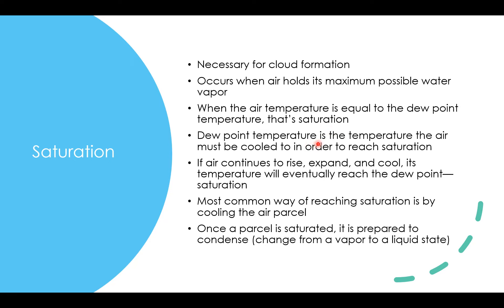The dew point temperature is the temperature the air must be cooled to in order for saturation to be reached. If air continues to rise, expand, and cool, its temperature will eventually reach the dew point and saturation will occur. The most common way of reaching saturation is by cooling an air parcel. Once a parcel is saturated, it is prepared to condense — to change from water vapor to a liquid state.